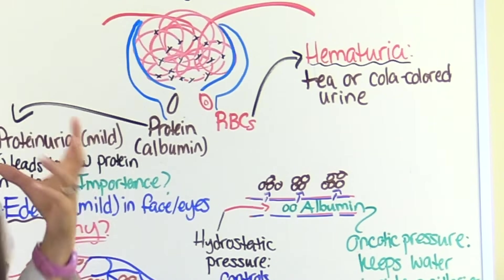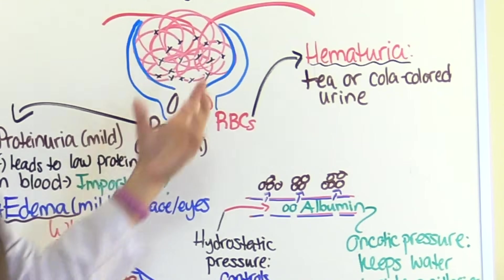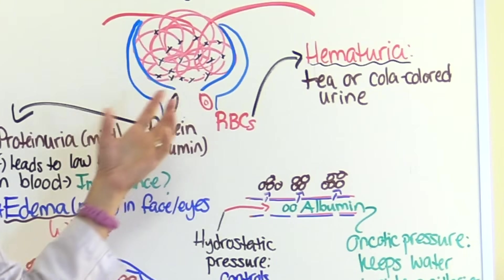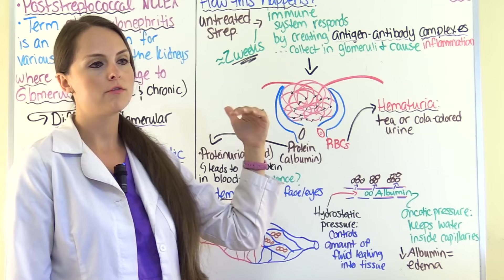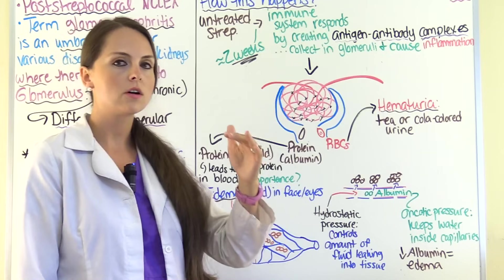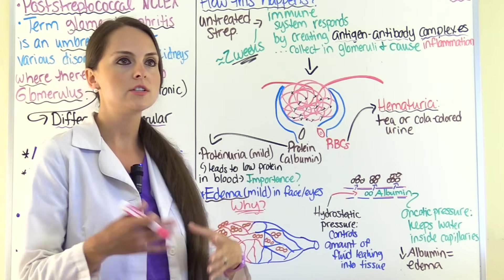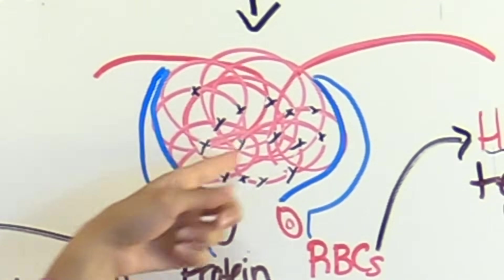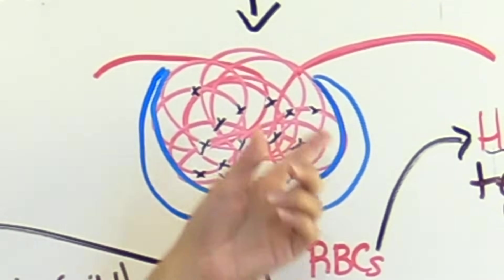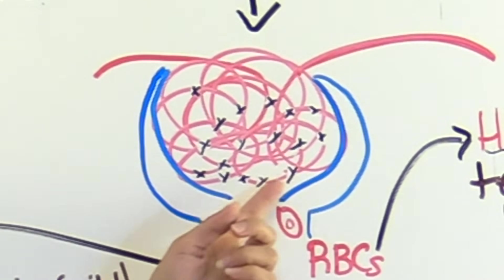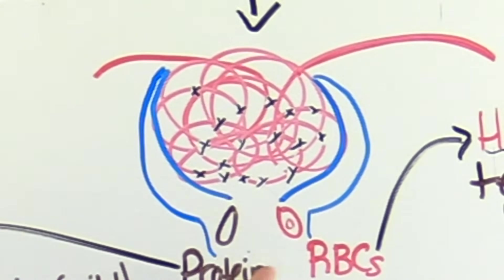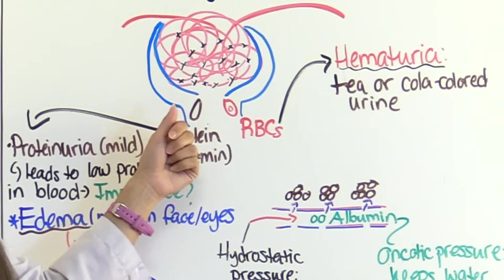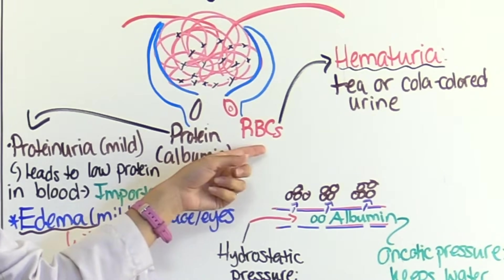Normally the glomerulus receives fresh blood and filters it out, dripping filtrate down into the Bowman's capsule, which flows through the proximal convoluted tubule, the loop of Henle, the distal convoluted tubule, and the collecting duct, eventually exiting the kidney as urine. In this condition, you can see within the glomerulus there are areas where complexes have gotten stuck, causing massive inflammation and opening up areas that allow proteins and red blood cells to drip down into Bowman's capsule.